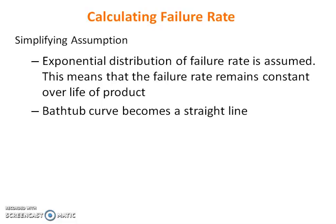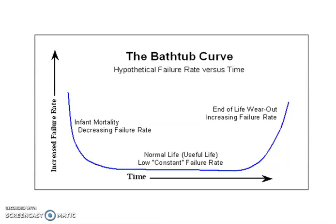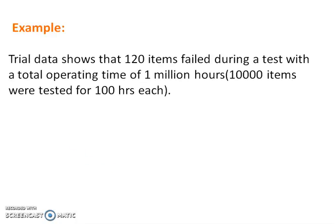The failure rate keeps on decreasing, then constant, then increasing. But to calculate the failure rate, we must assume it as exponential distribution or it remains constant over life of the product. So this bathtub curve, which is the shape of bathtub, becomes a straight line. So we can use the formula number of item failed divided by total duration. This is again our example of bathtub curve: infant mortality, normal life or constant failure rate, or near the end of life due to wear, the increasing failure rate.